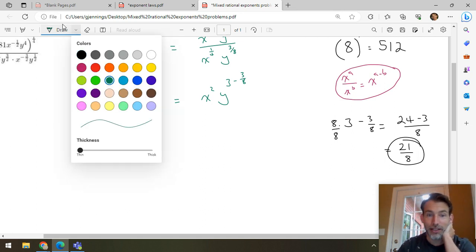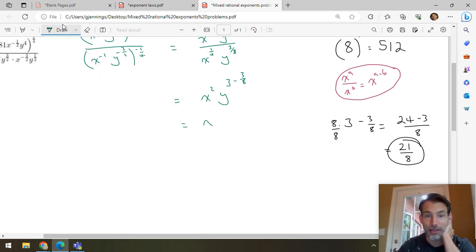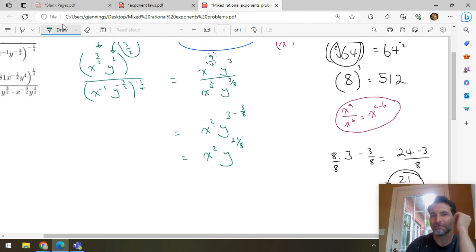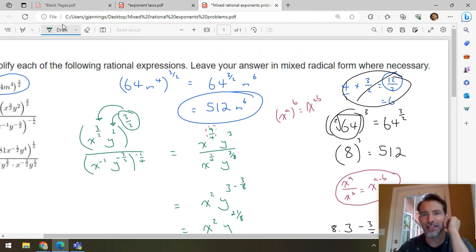So, final answer. x to the 2, y to the 21 over 8. I forgot. It said, leave your answer in mixed radical form where necessary. So, it wants us to change the form. No problem. I can do that.